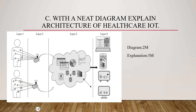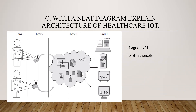For the question — with a neat diagram, explain the architecture of healthcare IoT (7 marks) — before drawing the diagram, start with four to five lines on how important healthcare IoT is and why it was introduced, worth one mark. Then draw the diagram with each layer: layer one is the sensor layer, layer two transfers sensor data to the application, layer three is cloud computing, and layer four is the application interface. Explaining all layers completely earns five marks, for a total of seven marks.